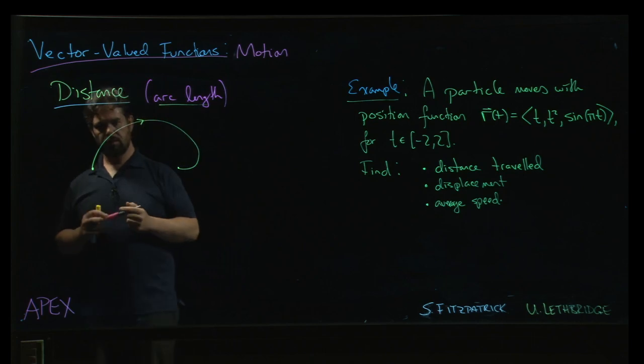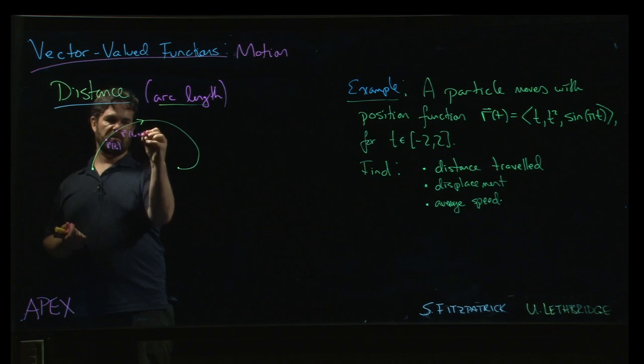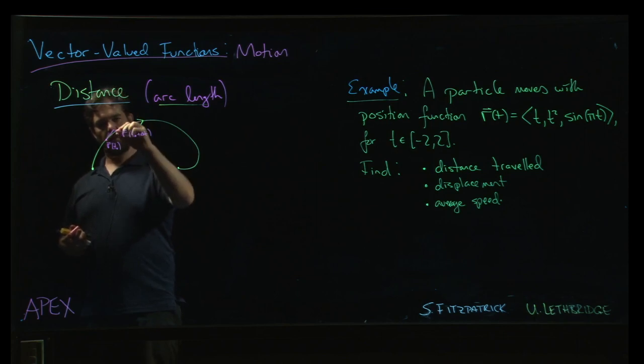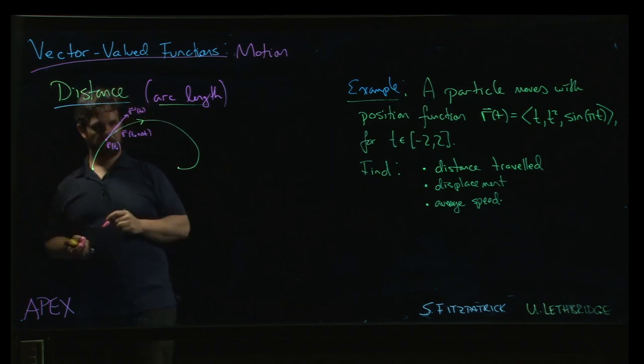But the idea here is if you think about nearby points, so here's a spot given by r of some initial point t0, and here's a nearby point t0 plus delta t. Well, we can also calculate the tangent vector at that point. Now, the tangent vector might be longer. Maybe the tangent vector is like here. So here's r prime at t0.